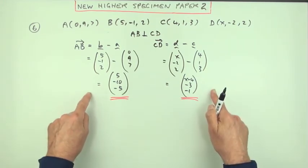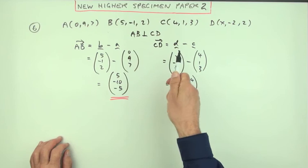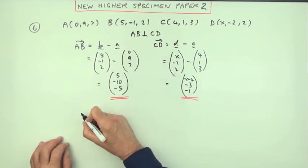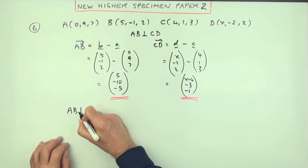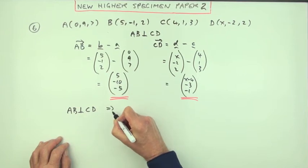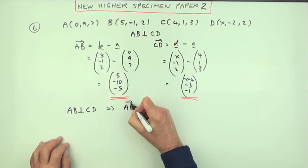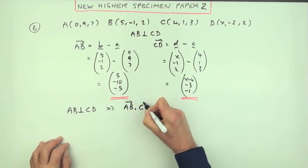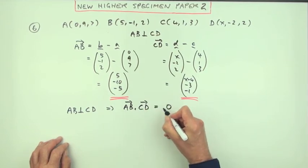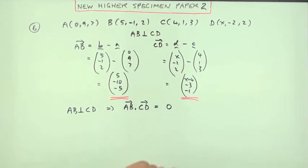Now I'll need a statement about why I'm doing this. If AB is perpendicular to CD, that means AB dot CD, in other words the scalar product, should come to zero. That's the mark.